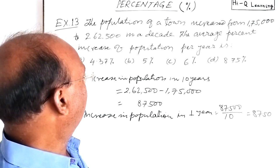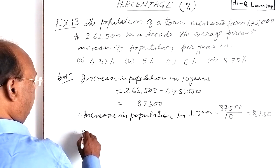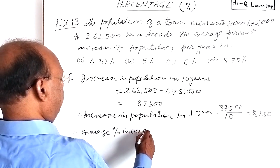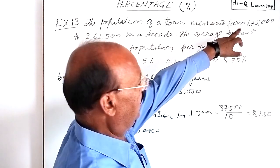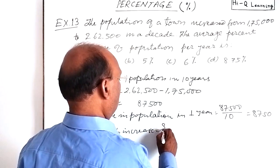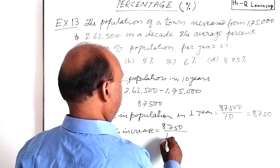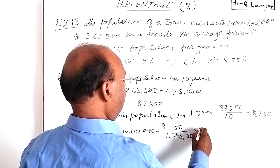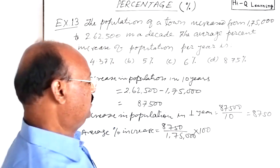So now we have to find out percentage increase. Therefore, average percentage increase will be simply increase divided by initial population: 8,750 divided by 175,000 into 100. By simplifying it, we will get the result.